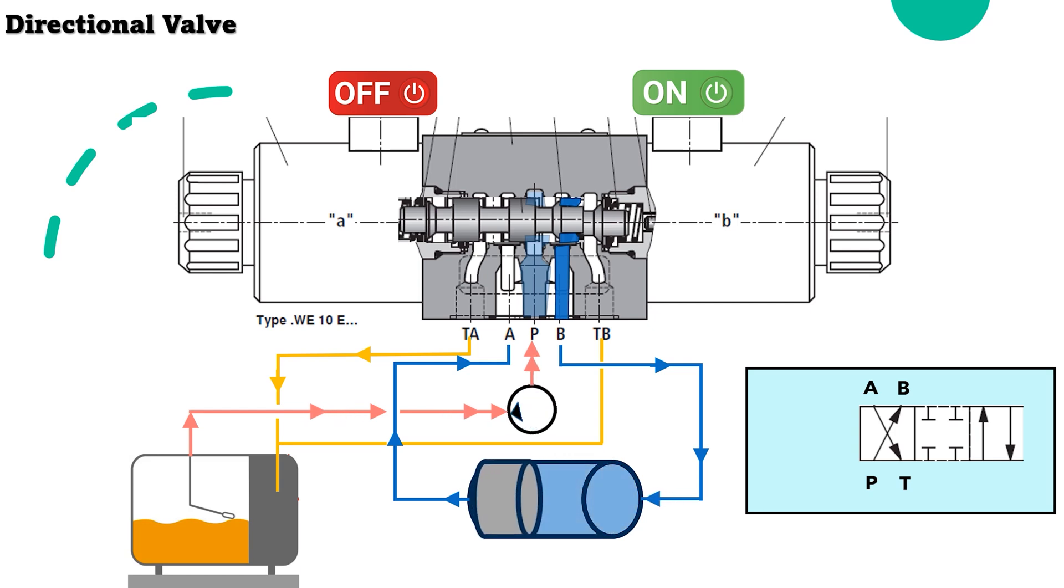The cylinder will move to end position. Return oil will flow from A to TB tank return.